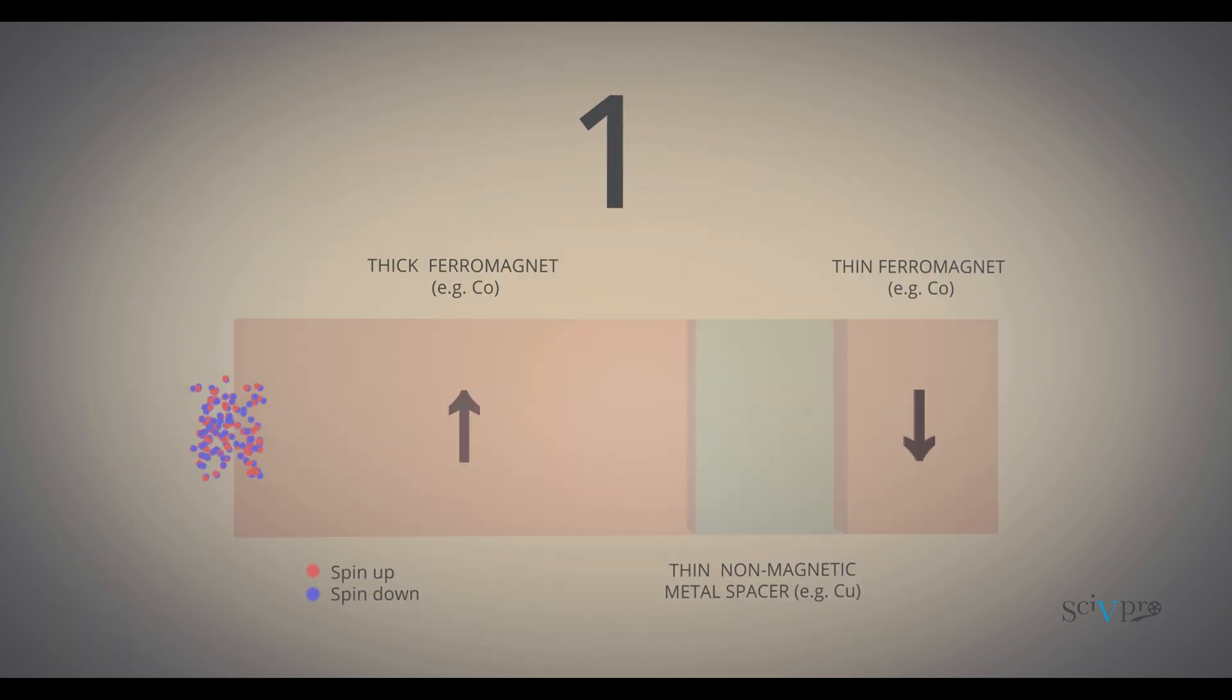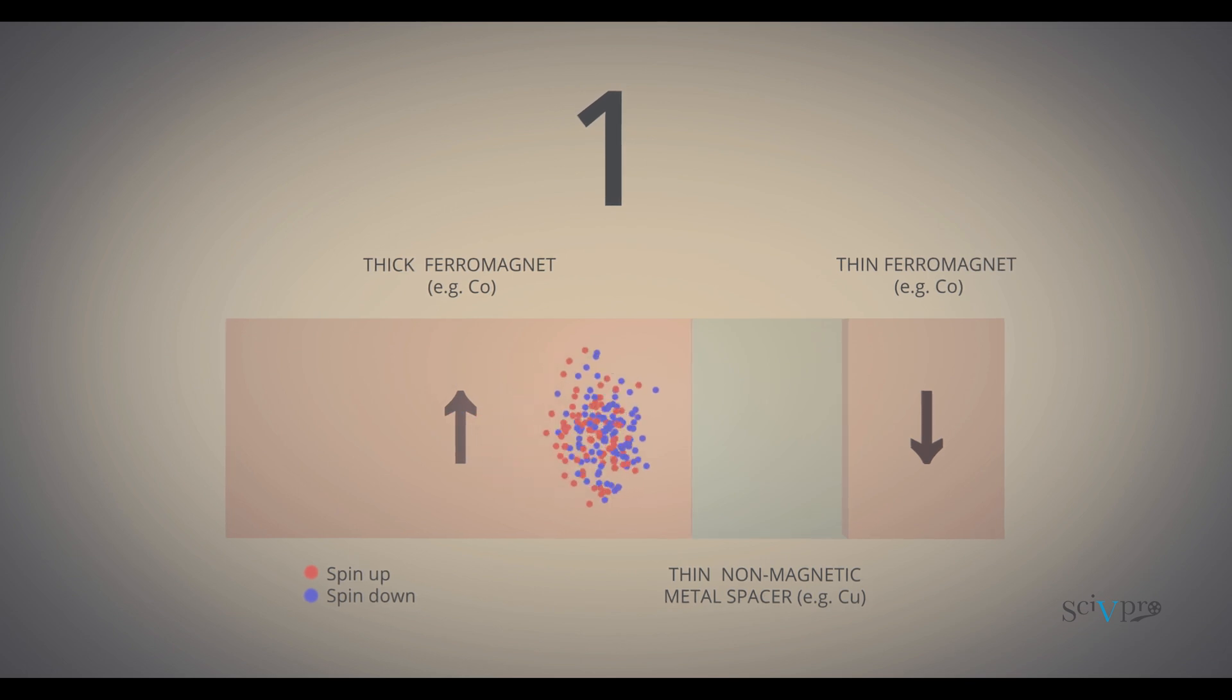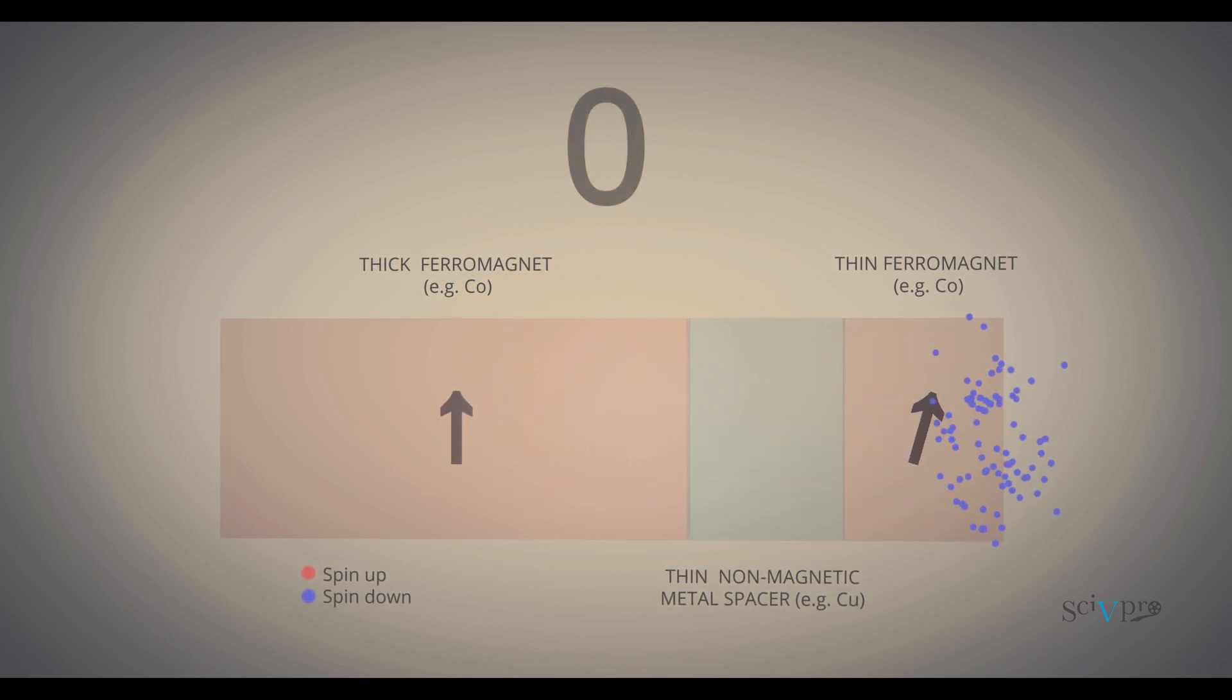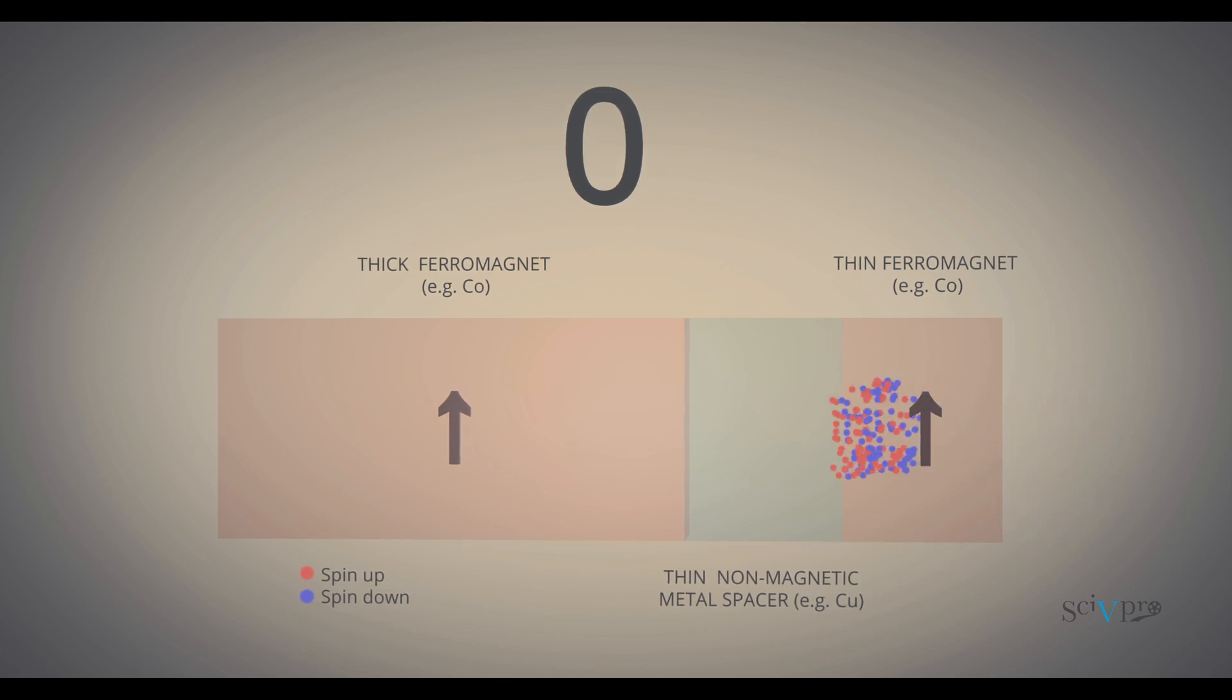In a spin transfer torque junction, spin polarized charges enter the ferromagnet and can switch its magnetization from one state to the other by generating torques. This is used to electrically write 0 and 1 bits.